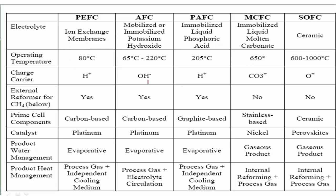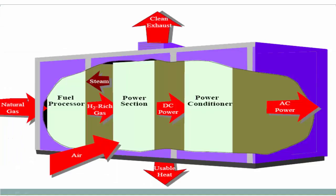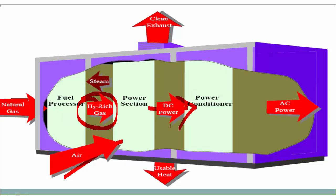For the proton exchange membrane fuel cell, the operating temperature and prime cell components include a catalyst for enhancing reaction rate. Here, natural gas and hydrogen go through a fuel processor to produce hydrogen-rich gas. H2 and oxygen react to produce DC power. At the outlet, we have clean exhaust, which is water. After a power conditioning stage, this becomes AC power. Hydrogen and oxygen form water in the process within the fuel cell.